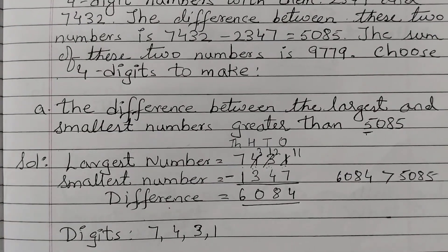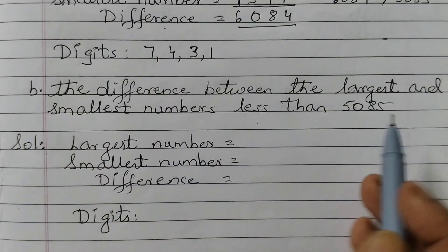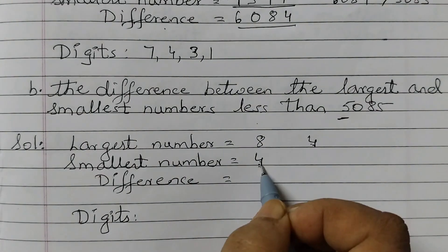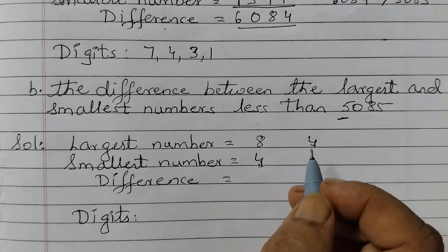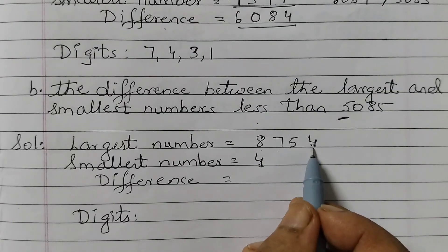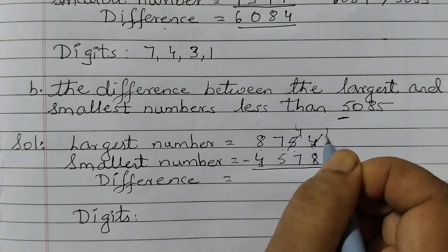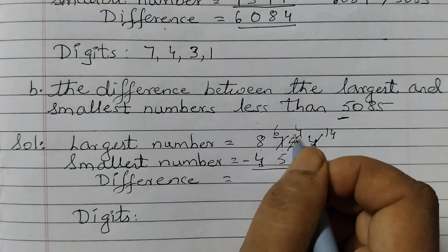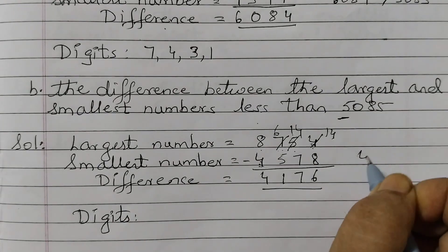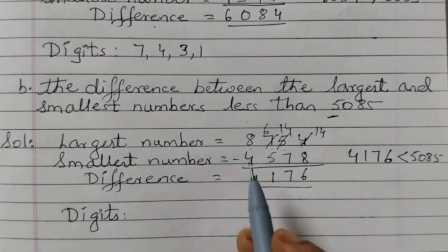That was part A. Let's do part B now. The difference between the largest and smallest numbers should be less than 5,085. Same way, I will choose the thousands digits first. I will make 8 and 4. 8 minus 4 is 4. So let's make the number 8,754. The largest number is 8,754 and the smallest number is 4,578. When we subtract, we get 4,176, and 4,176 is less than 5,085. So the digits are 8, 7, 5, 4.